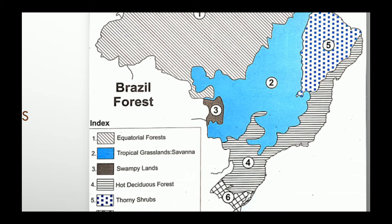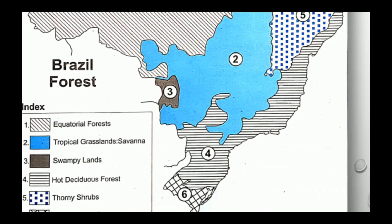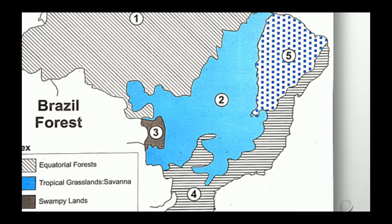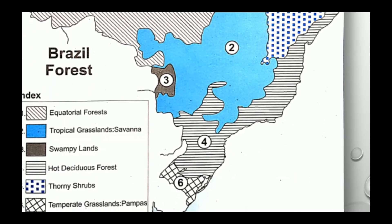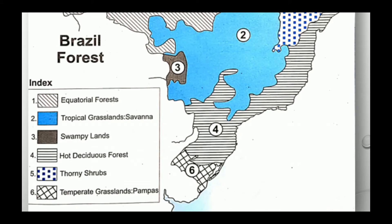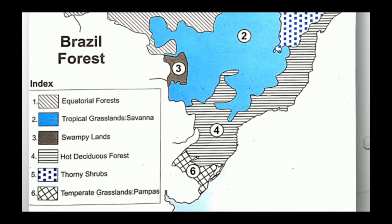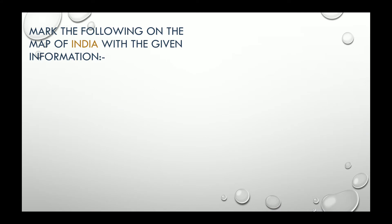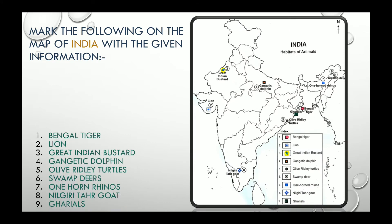Number three is swampy land or the marshy area which is called Pantanal, marked in brown color. Number four is hot deciduous forest and you can see this is the great escarpment area. Number five, thorny shrubs, is in the Caatinga — the eastern part of Brazil. The last one, number six, is temperate grassland in the southernmost part of Brazil, which is called Pampas.